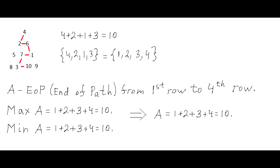This diagram shows the antipascal triangle in the description of this problem. The red lines show the path from the first row to the last fourth row: 4 plus 2 plus 1 plus 3. Notice that the numbers along this path are 1, 2, 3, 4 in a certain order.